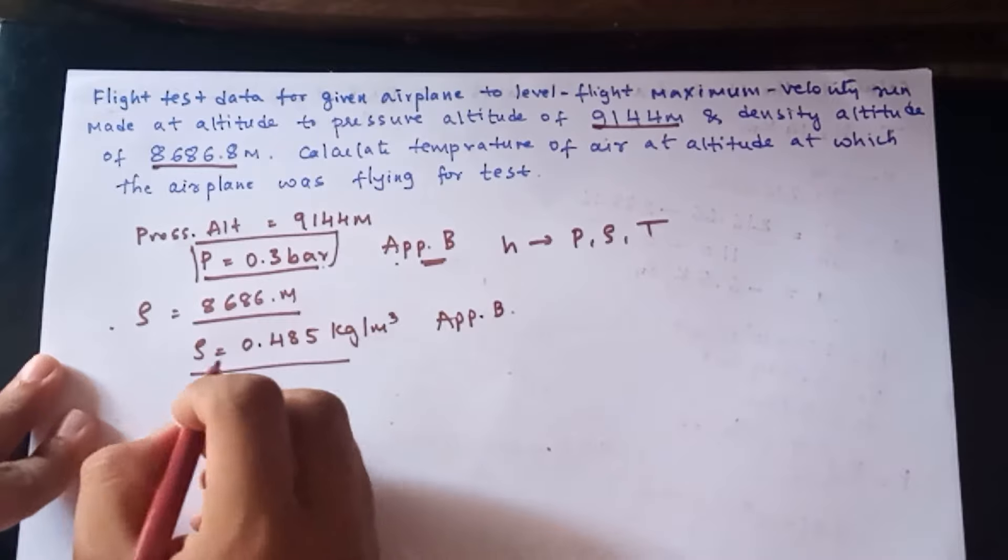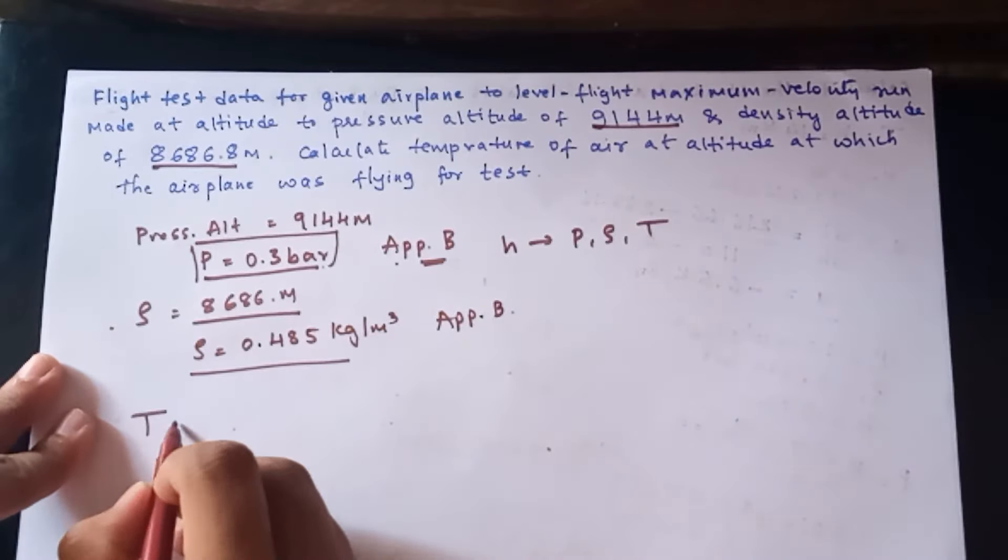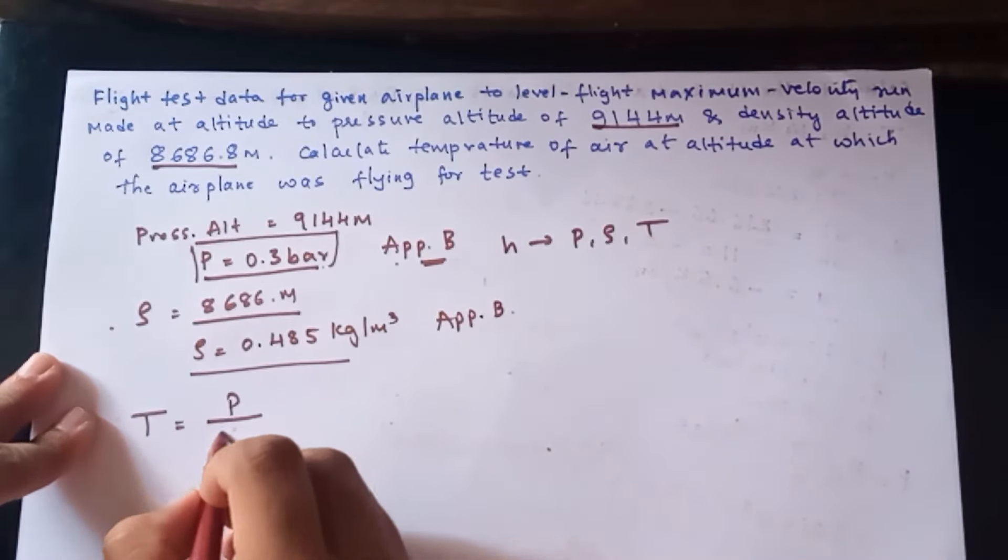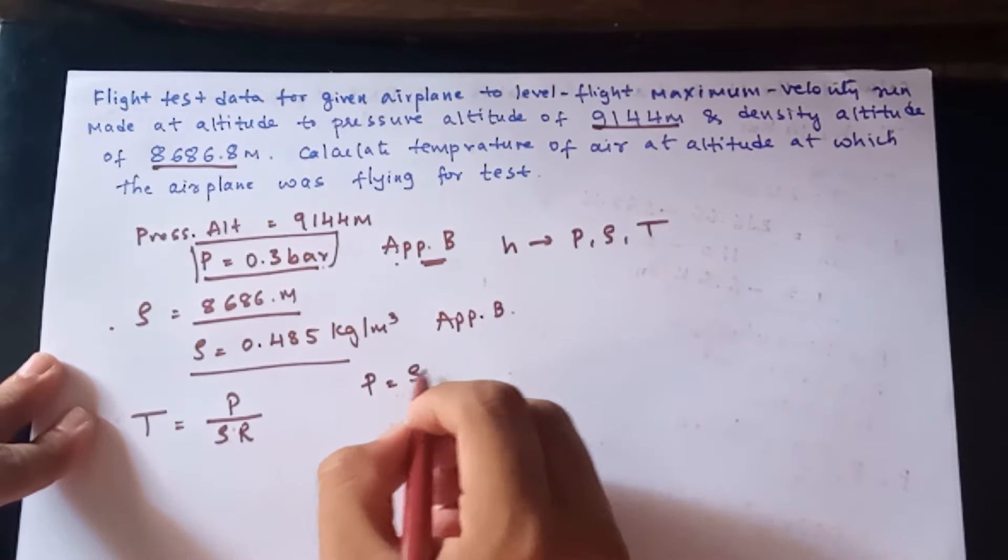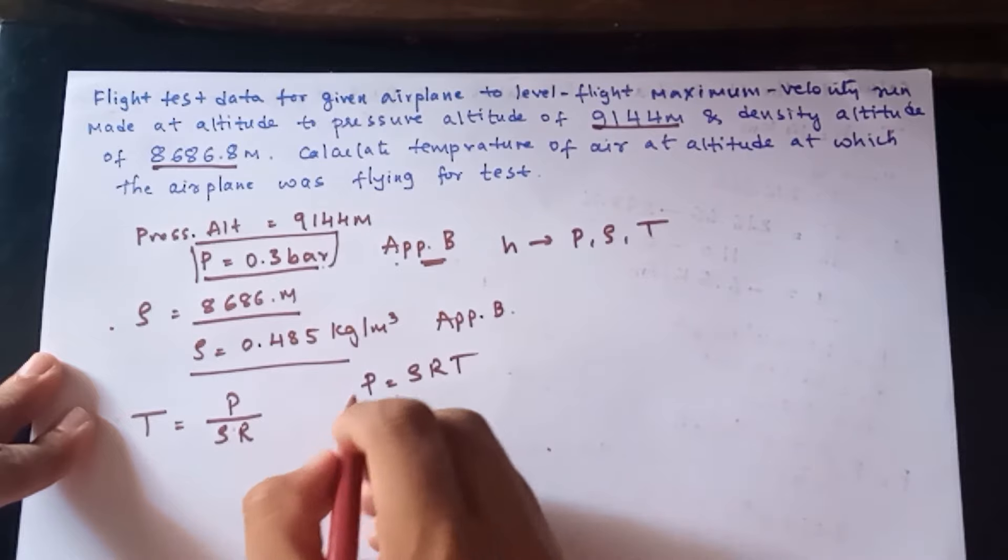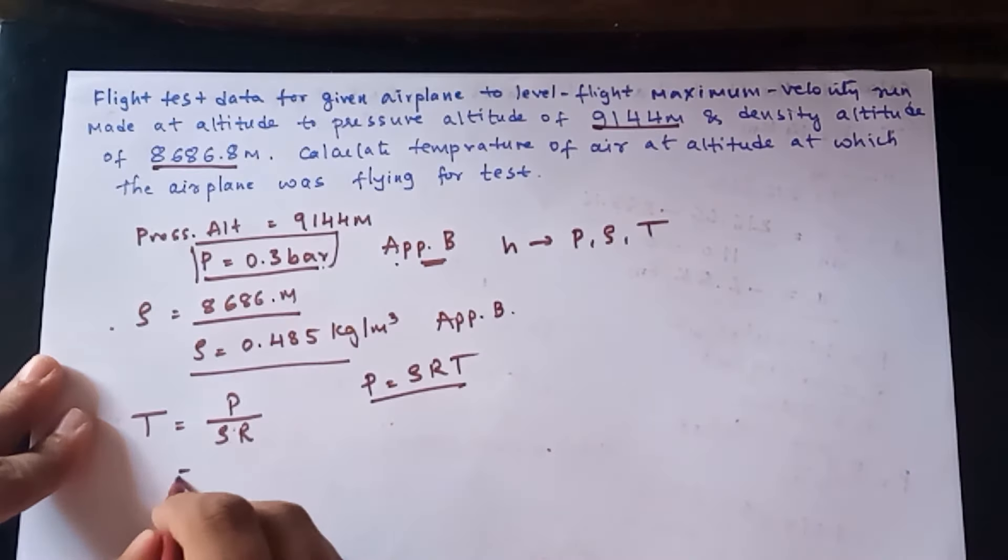From these values, we know the formula for temperature T = P/(ρr). How did it come? P = ρrT. From this expression, I am solving for temperature.